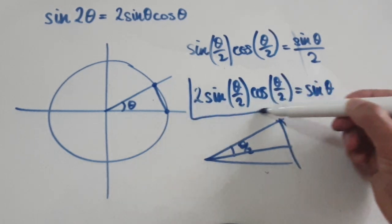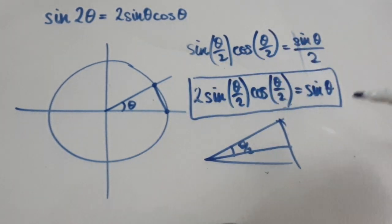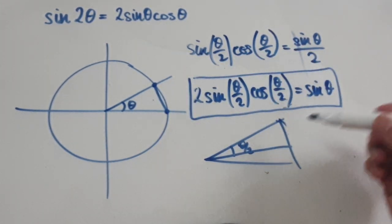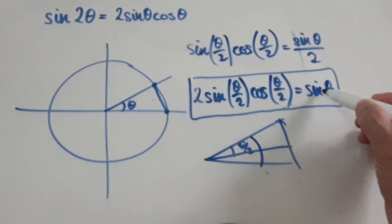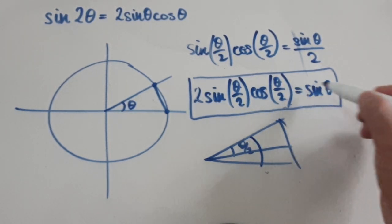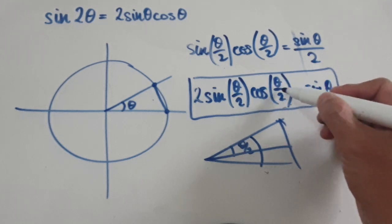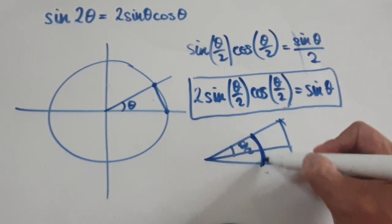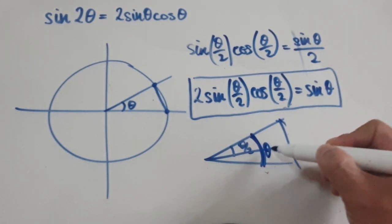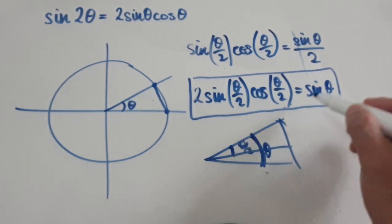You can make this simpler by noting that this angle theta is always twice the size of this angle theta over 2.